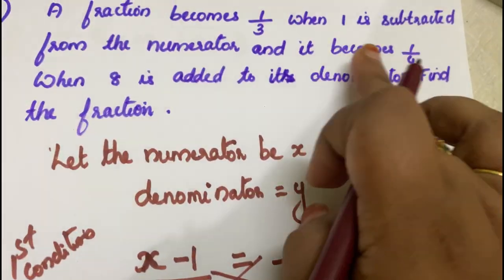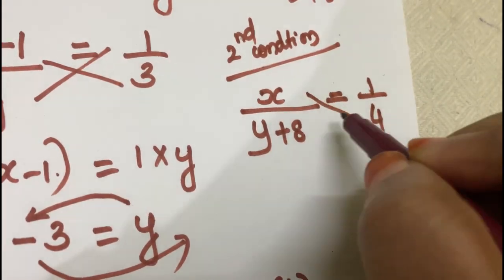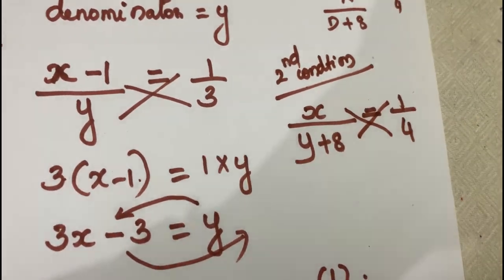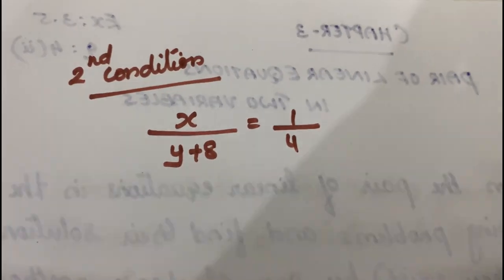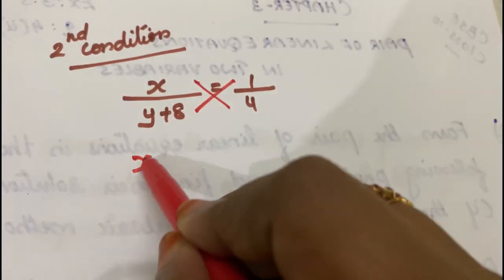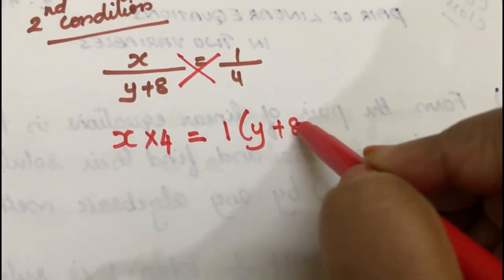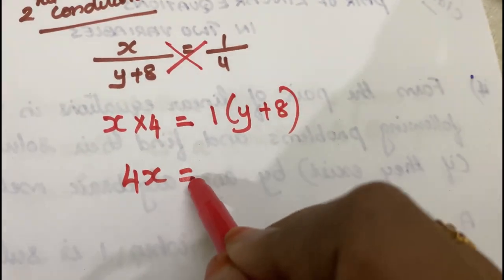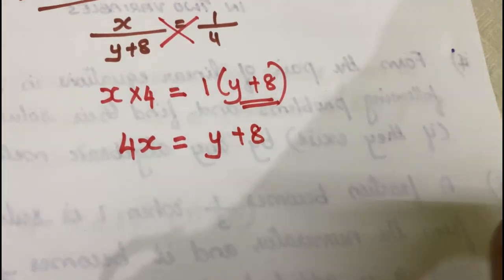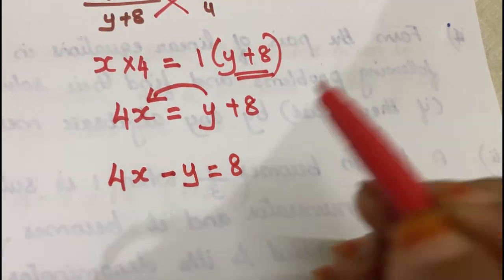Now the fraction is 1 by 4. We will create an equation. So we will cross multiply. Cross multiplying: x into 4 equals 1 into (y plus 8). After multiplying and transposing, we get 4x minus y equals 8. This is the second equation.